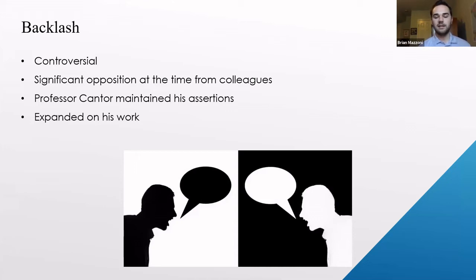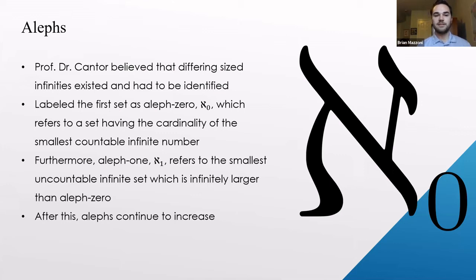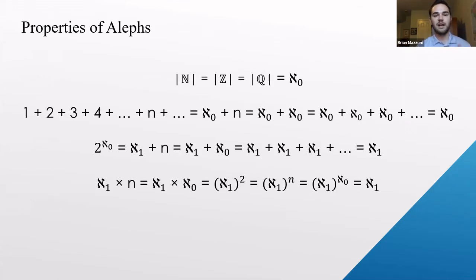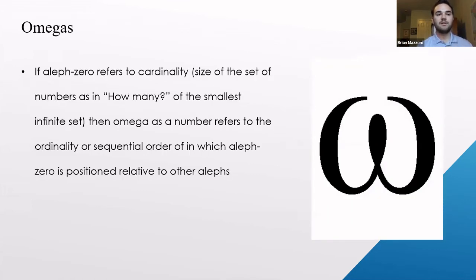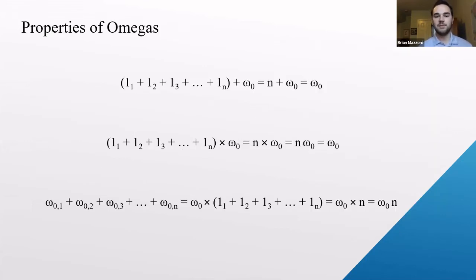Since different size infinities existed, Cantor believed they needed to be identified. He labeled the smallest countable infinite set aleph-zero, using the Hebrew symbol aleph. Aleph-one refers to the smallest uncountable infinite set, infinitely larger than aleph-zero, and alephs continue to increase with their own unique properties. Accompanying alephs are omegas: if aleph-zero refers to cardinality — the size of the smallest infinite set — omega as a number refers to ordinality, the sequential order of aleph-zero relative to other alephs, and omegas also have their own unique properties.